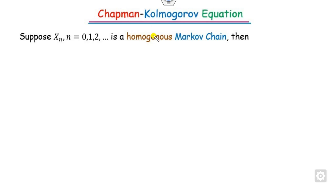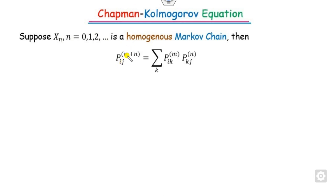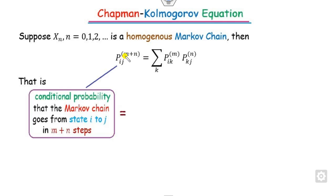What is the Chapman-Kolmogorov equation? If we have a homogeneous Markov chain X_n where n varies from 0, 1, and so on, with discrete states, then p_ij of m+n is defined by this equation. The meaning of p_ij^(m+n) is the conditional probability that the Markov chain goes from state i to state j in m+n steps.